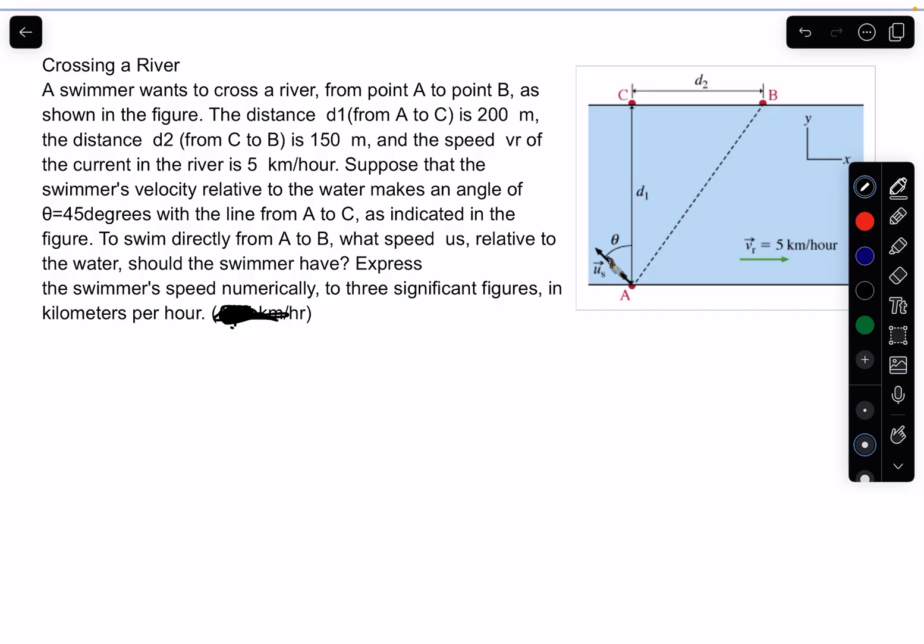So we've got this distance. Let's label this out. This is 200 and this is 150, that's d1 and d2 in meters. The swimmer is going to go off at an angle of 45 degrees, and we've got a current of 5 kilometers per hour. So what I decided to do is define U of the swimmer.